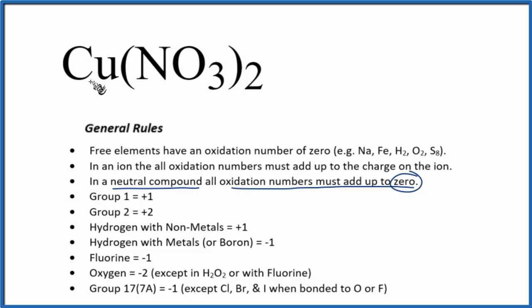We don't know copper. That's a transition metal. It can have different oxidation states depending on what it's bonded to. The one thing we do know and that you should memorize is nitrate. This NO₃ here, this is a polyatomic ion and it has a 1- ionic charge.